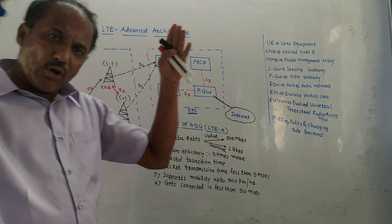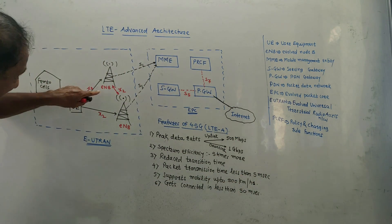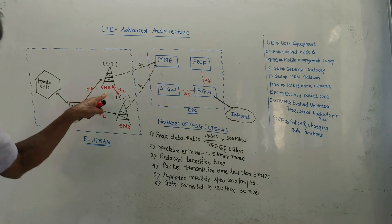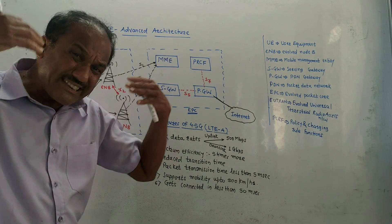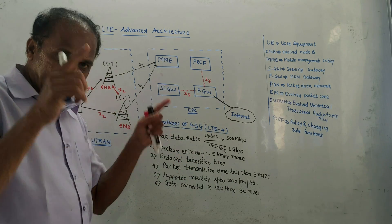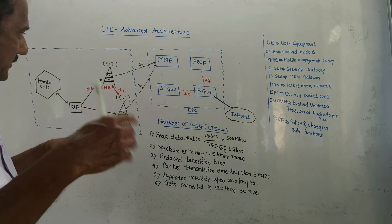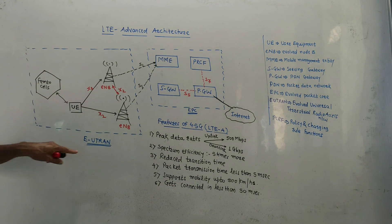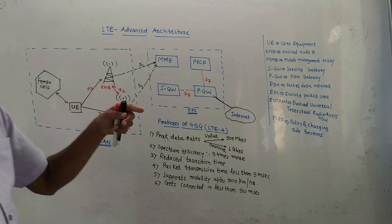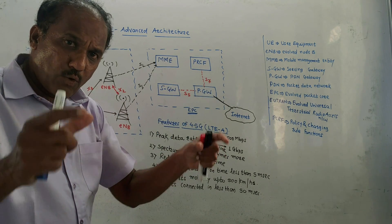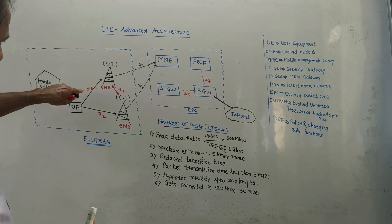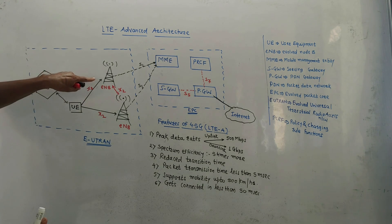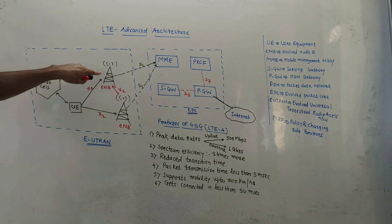The femto cell is basically a smaller cell. eNB, that is evolved Node B, can handle one or more cells at a time — this is an important feature. It handles more than one cell at a time, and it also supports the femto cell. The femto cell is the smallest cell, which covers the home area.